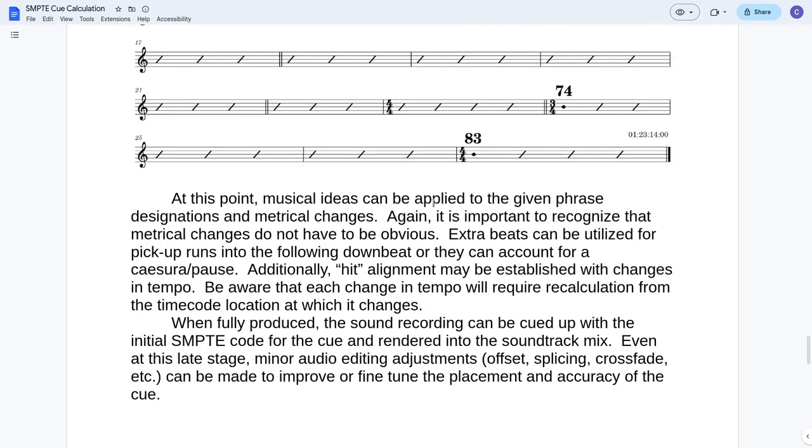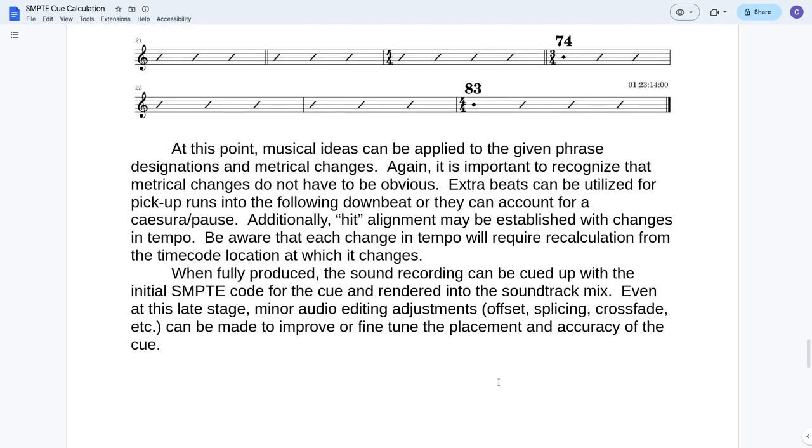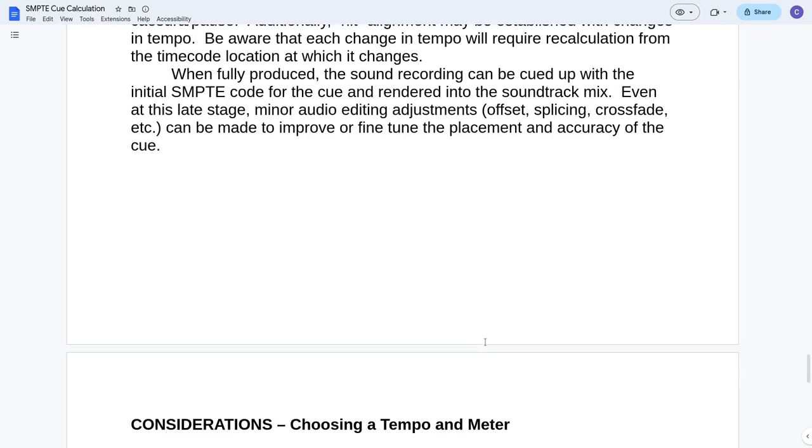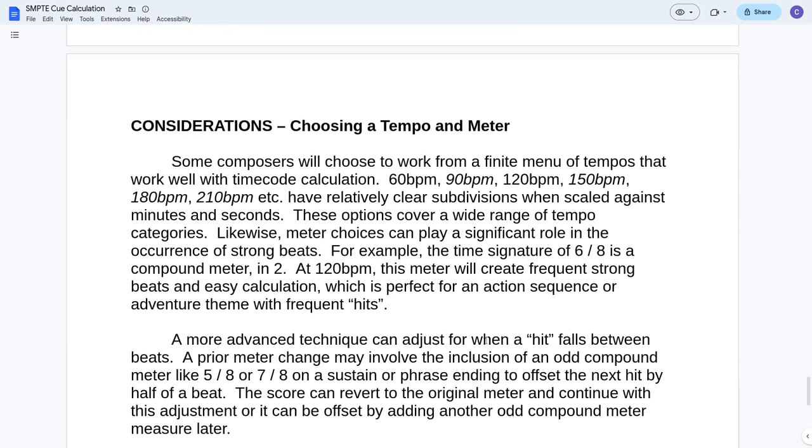Now I'm not giving the MuseScore people a license to just leave synchronization off of their software. I'm not saying this is better. I'm just saying it's good to know these techniques because it does create a very intricate map that can create very intricate and effective, accurate cues for your film. At this point, musical ideas can be applied to the given phrase designations and metrical changes. Extra beats can be utilized for pickup runs into the following downbeat. They can account for a caesura or a pause. Additionally, hit alignment may be established with changes in tempo.